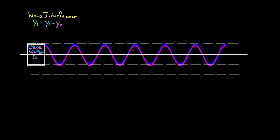So if we add up the contributions from wave one and wave two: wave one has a value of one unit, wave two has a value of one unit. One plus one is two units, zero plus zero is still zero, negative one and negative one is negative two. You keep doing this and you realize you're just gonna get a really big cosine-looking wave. We say that these waves are constructively interfering.